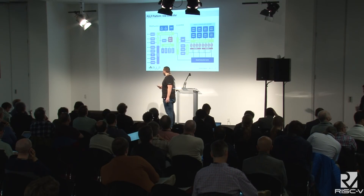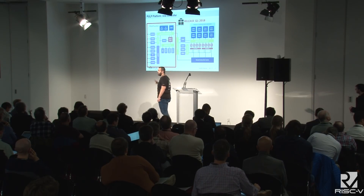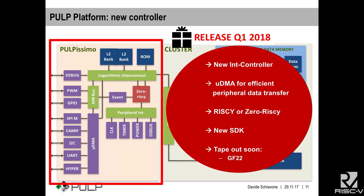The good news is that we plan to release this part of the chip at the beginning of next year, once we finish the tape-out. It includes a new micro-DMA system — an AXI-based system very efficient in terms of performance and energy. You can plug in and plug out your favorite core already available on GitHub, along with a new interrupt controller, debug support, new sets of peripherals, and a completely new SDK, quite different from the one familiar in PULPino.